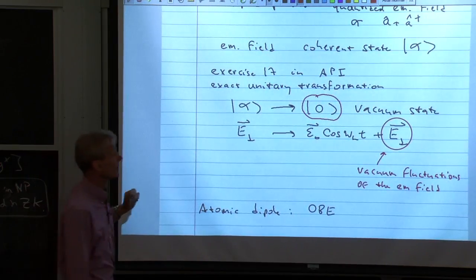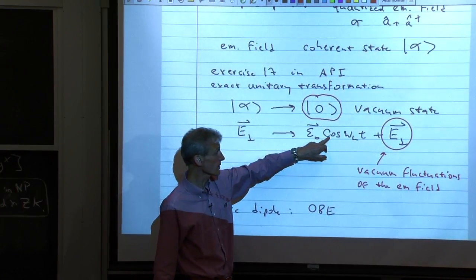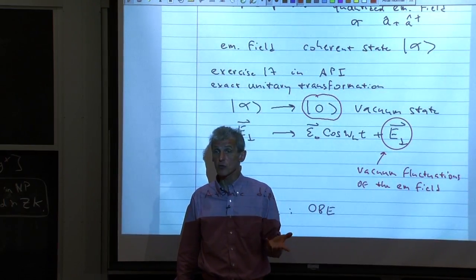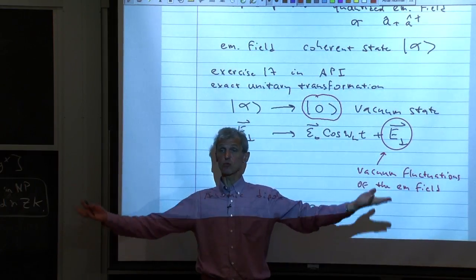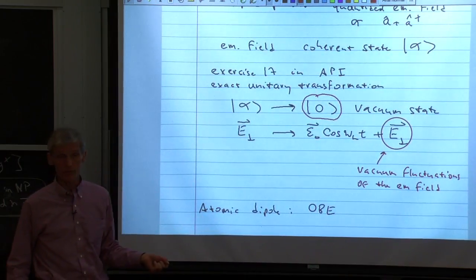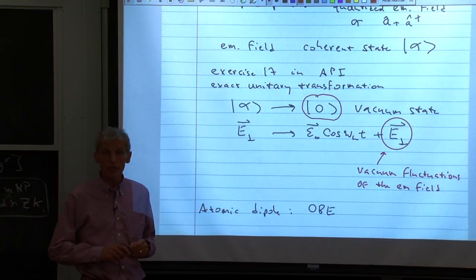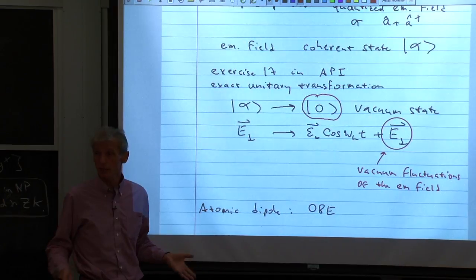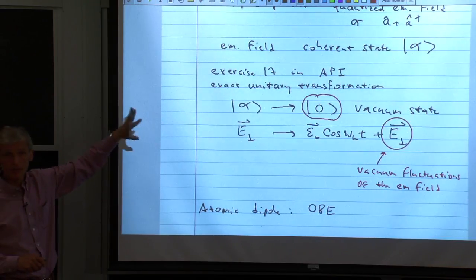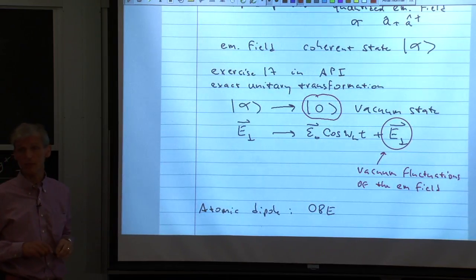The coherent state is the vacuum with a displacement operator. All the quantumness of the electromagnetic field is in the vacuum state, which is responsible for spontaneous emission and quantum fluctuations. But the displacement operator can be absorbed by completely treating the electromagnetic field classically. So we take the fully quantized electromagnetic field, replace it by a classical field and simply the vacuum fluctuations. There are no photons around anymore — there is the vacuum ready to absorb the photons, and a classical electromagnetic field which drives the atoms.